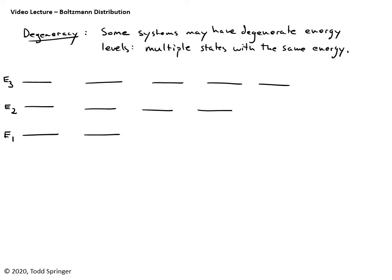There is one extra complication I need to introduce you to, which is in some physical systems — this is an energy diagram here — you can have multiple states with the same energy. What I've drawn here is two different states with the same energy E1, four different states with energy E2, and five with energy E3. We call this degeneracy: degenerate energy levels, meaning there are multiple states with the same energy.